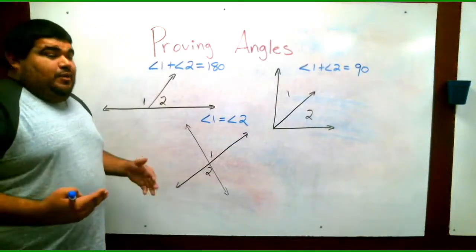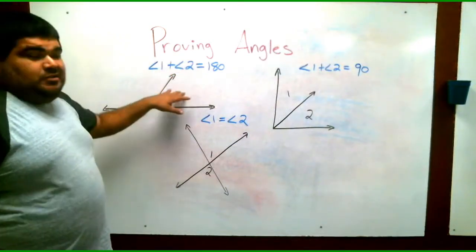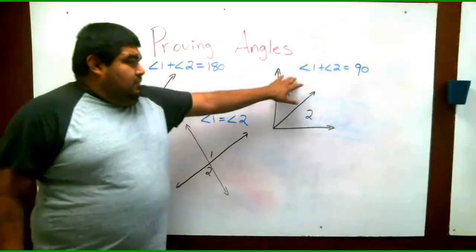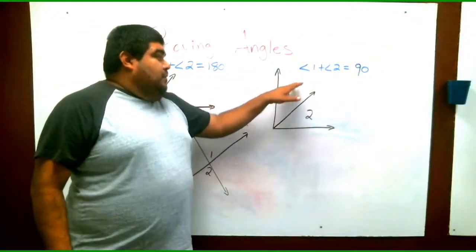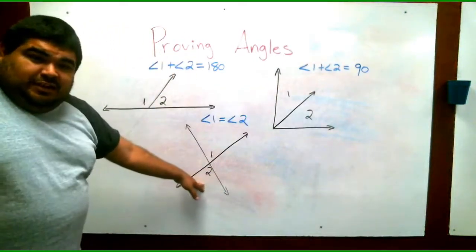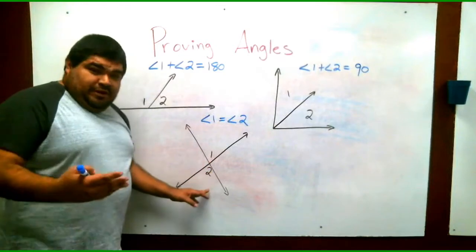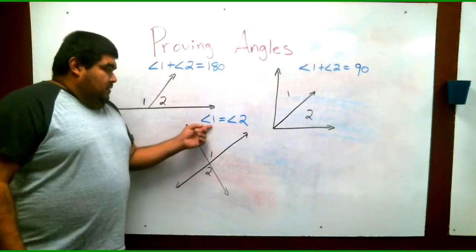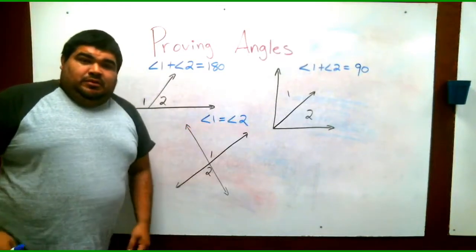For this third one, we didn't really get too much into it other than the angles are exactly the same. When you set it up into an equation, you set it up as angle one equals angle two because they're the same. They're identical. So this is something you have to get familiar with. Angle one plus angle two when it comes to supplementary equals 180. The same for complementary. Angle one plus angle two equals 90. And then finally, for two adjacent angles or congruent angles, angle one equals angle two.